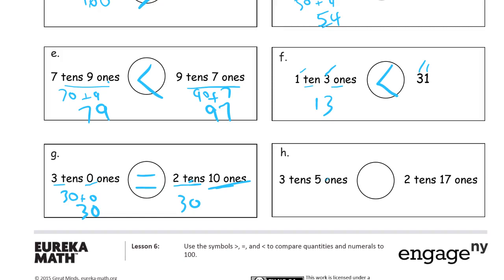3 tens 5 ones is 30 and 5, so that's 35. 2 tens 17 ones, that's 20 and 17, so 20 plus 17, that's actually 37, so 35 is less than 37. So be careful with these.